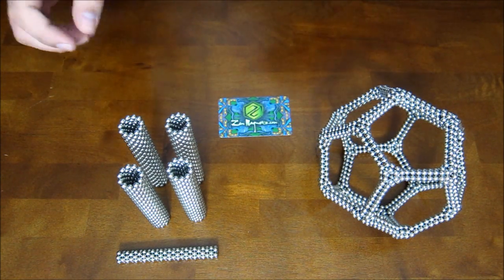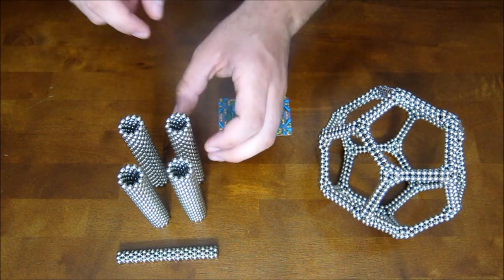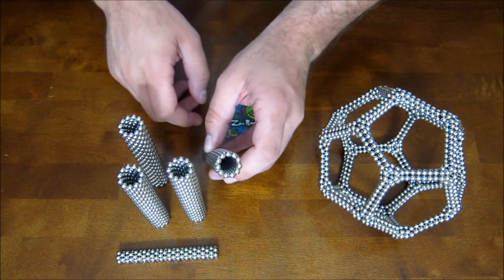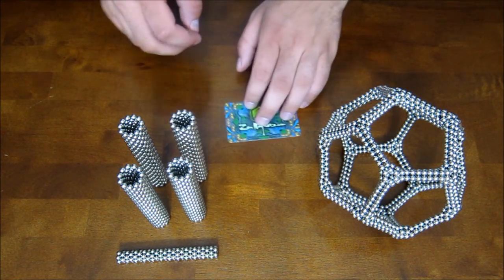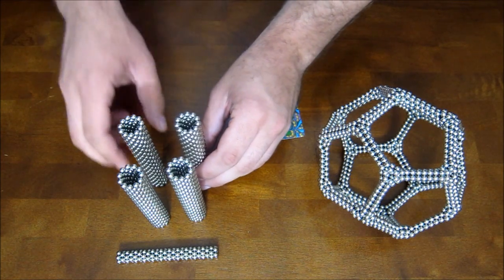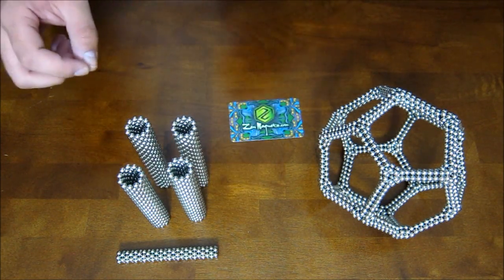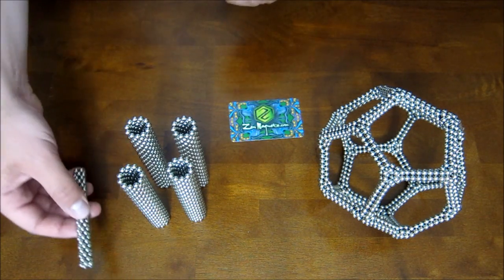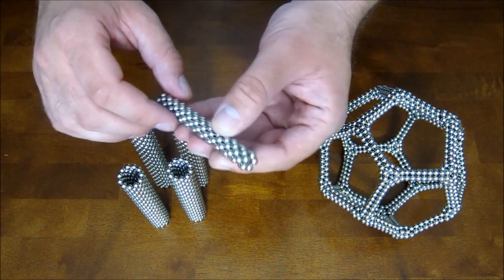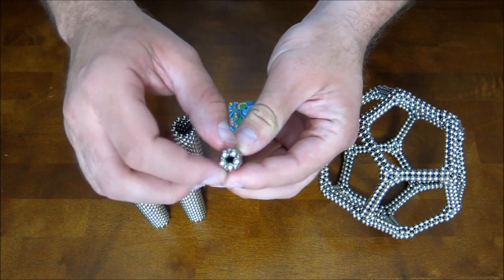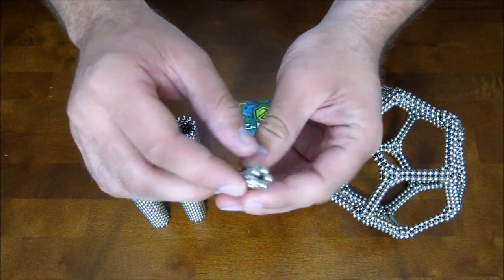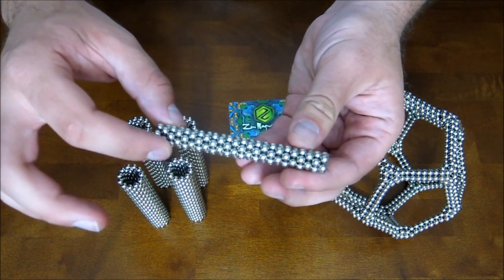The next thing that you need are these, which are rings of 11 magnets, and you need 120 of them. I have them in 4 stacks of 30 here. And then the last thing that you need is this, which is a tube of 5 magnets around and it's 24 rings long.